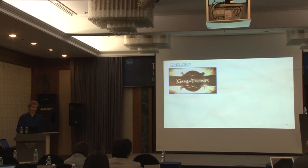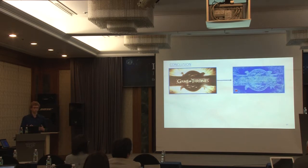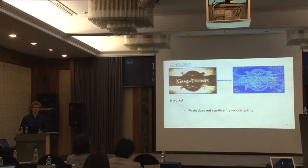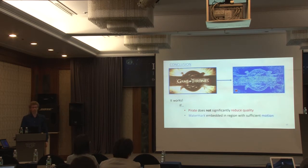To summarize: embedding a visible watermark in a video does not only affect that small area — it also has an effect on the whole video through unique compression artifacts. Detecting a watermark based on this alternative watermarking representation works, but under certain conditions: the pirate should not significantly reduce the video quality, especially if the video was encoded with low QP (high quality), as it is not super robust in that case. And the watermark should be embedded in a region within the video that has sufficient motion.